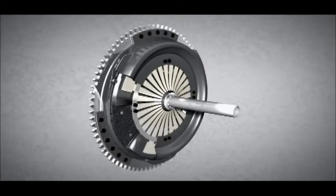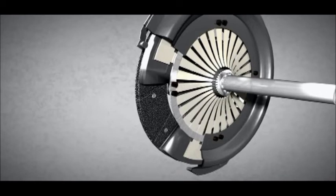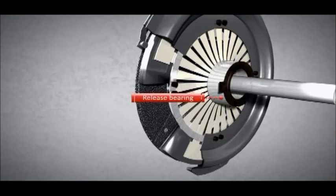Let's take a closer look to see what happens in this important component. A clutch release bearing is positioned in front of a diaphragm spring.